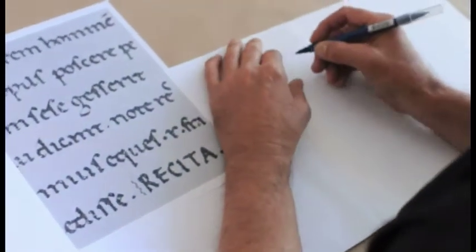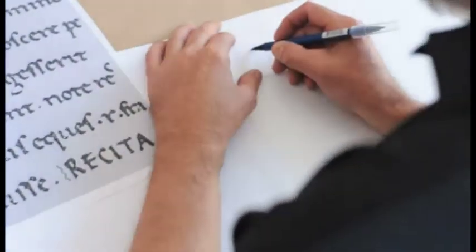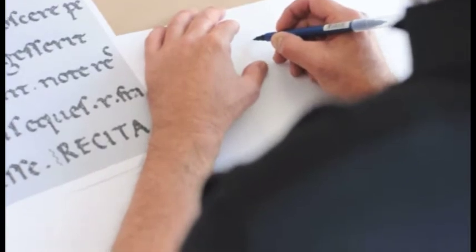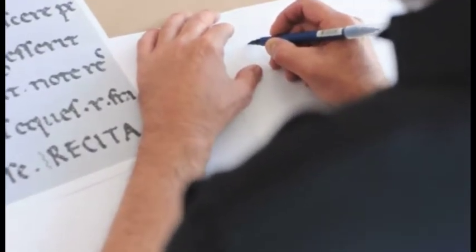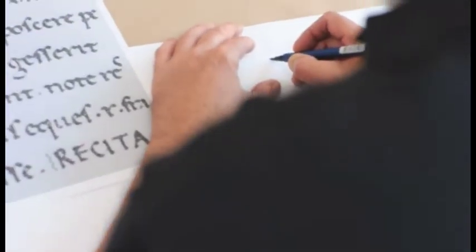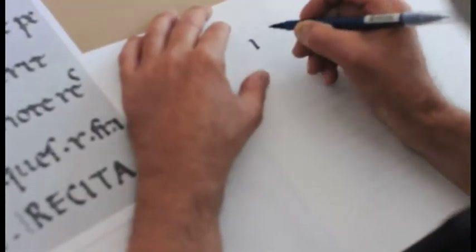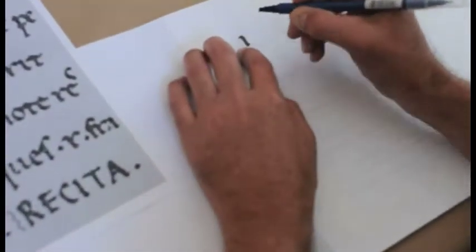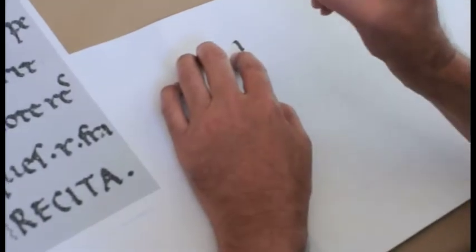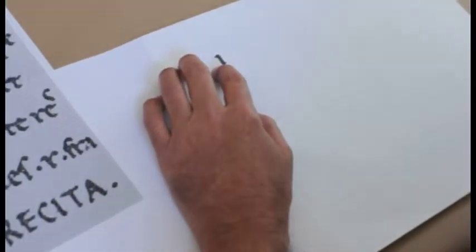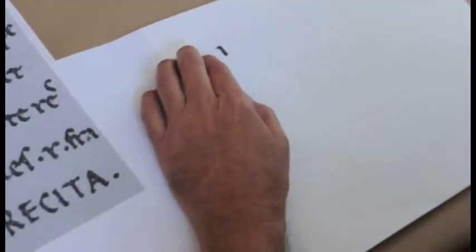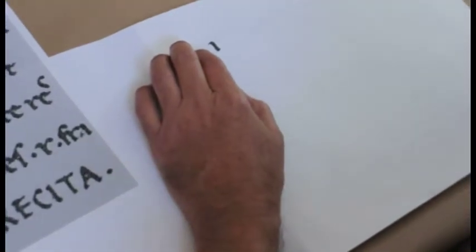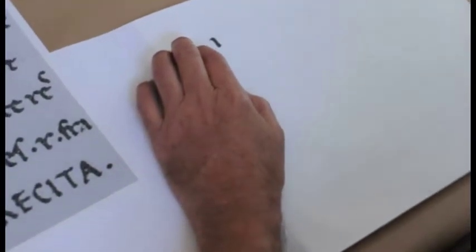And so when you're making this basic stroke, which is in the N and the M and the I, this initial part is round. It doesn't just start and then down. It's got a curve to it. So on all of these strokes that have arches, you need to think about the roundness.